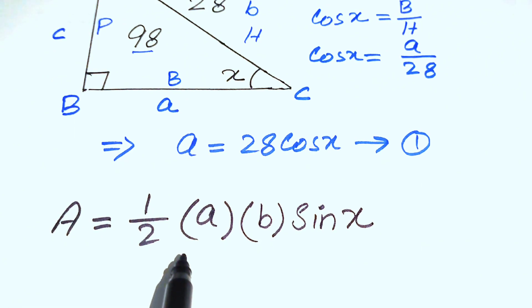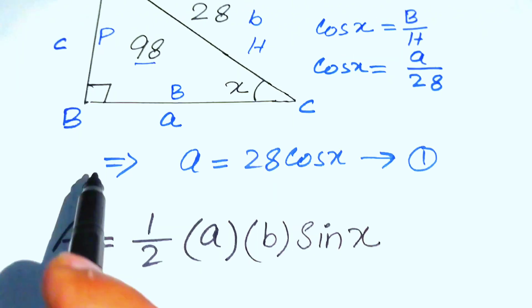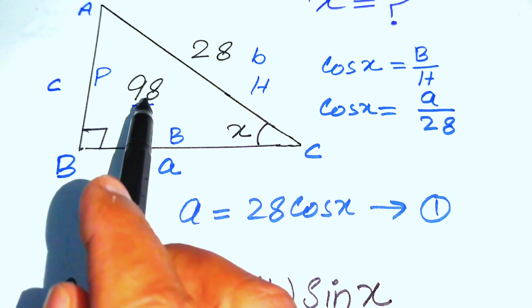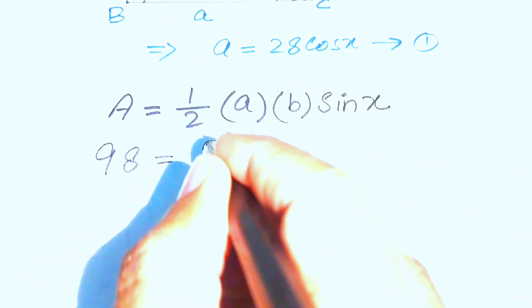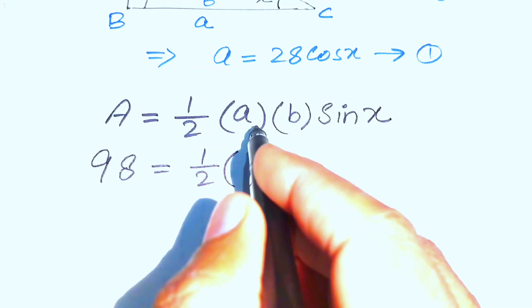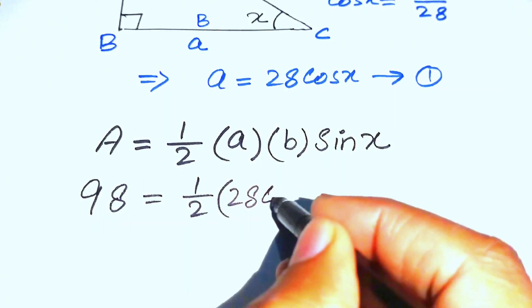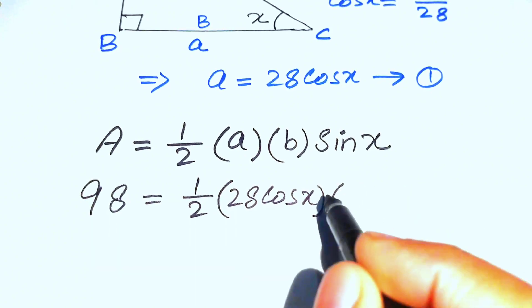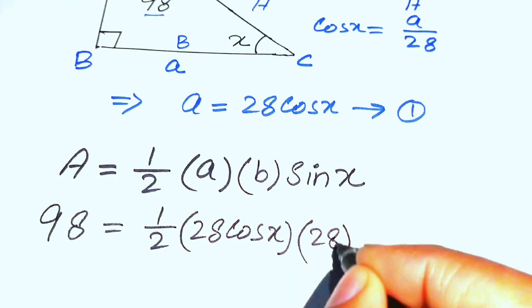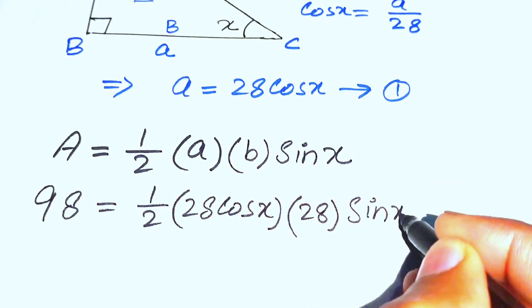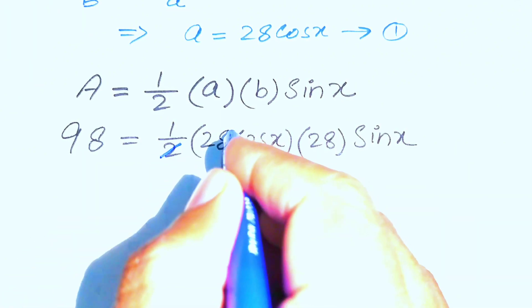Now we substitute all the known values. The area is 98, so: 98 = ½ · a · b · sin(x). We substitute a = 28·cos(x) from Equation 1, and b = 28, giving us: 98 = ½ · 28·cos(x) · 28 · sin(x).